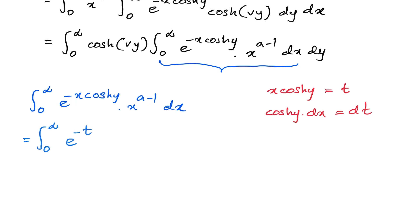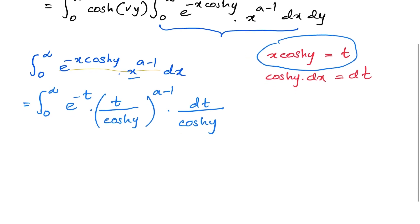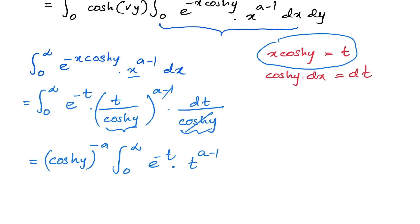Plugging in, the limits remain 0 to infinity, e to the minus x·cosh(y) becomes e to the minus t, and x = t over cosh(y). So x to the a minus 1 becomes t over cosh(y) to the a minus 1, and the cosh(y) factors cancel, giving cosh(y) to the minus a times the integral from 0 to infinity of e to the minus t times t to the a minus 1 dt.